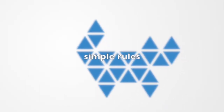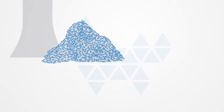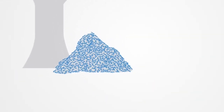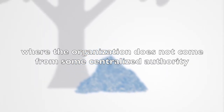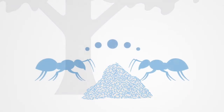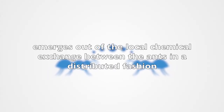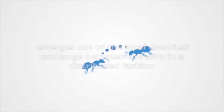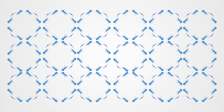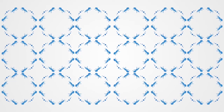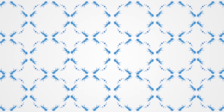Self-organization is guided by relatively simple rules. The classical example of this being ant and termite colonies, where the organization does not come from some centralized authority such as a queen ant, but instead emerges out of the local chemical exchange between the ants in a distributed fashion. Such local communications inform the ants as to what is happening within the colony and they then perform certain tasks depending on that local information.